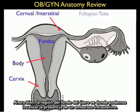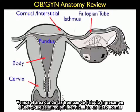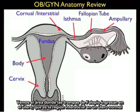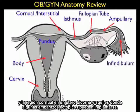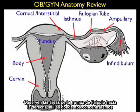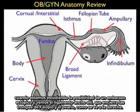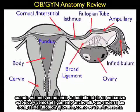The fundal region is where we define an intrauterine pregnancy to be located. We see the area where the fallopian tube enters into the uterus, which is the interstitial region in a normal uterus and the corneal region in a bicornate uterus — this is where some variants of ectopics can implant. We also see the broad ligament encasing the fallopian tube and the ovary.